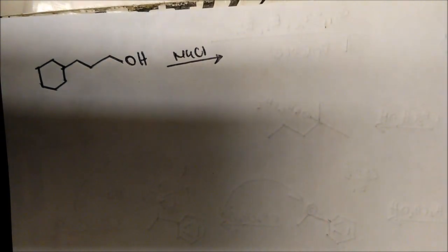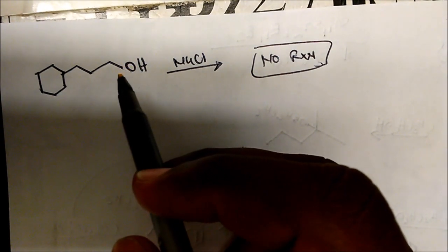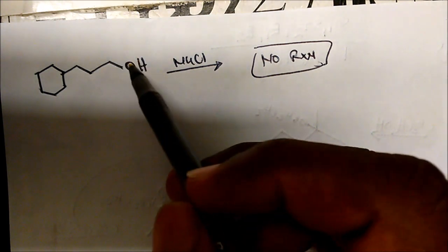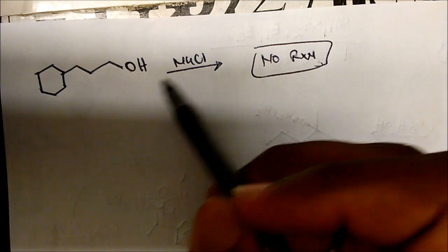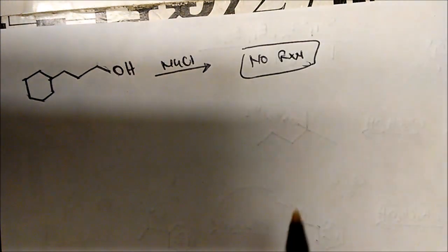Now what about this? What if you take this and react it with sodium chloride? What would be your neutral product? The answer to this question is no reaction. Hydroxide is a terrible leaving group, so it needs protonation. This will not be an E1 reaction because there's no H⁺ source here for this to get protonated. Putting this organic substrate in solution with sodium chloride will give you no reaction.